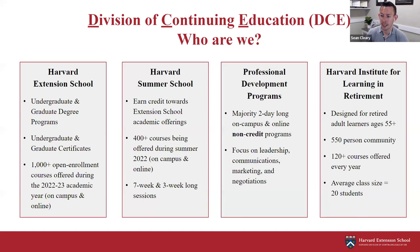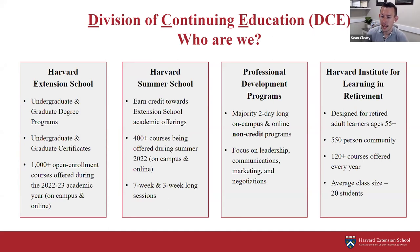Harvard Summer School is where students can earn credit toward Extension School academic offerings, and it's also popular for students from other institutions seeking summer credit. We have over 400 courses this summer, both on-campus and online, and these are accelerated — either seven weeks or three weeks long, compared to the Extension School's typical 15-week courses. Professional Development Programs are mostly two-day non-credit programs covering topics like leadership, communications, marketing, and negotiations. Harvard's Institute for Learning and Retirement is designed for retired adult learners ages 55 and older — a 550-person community offering over 120 courses annually.